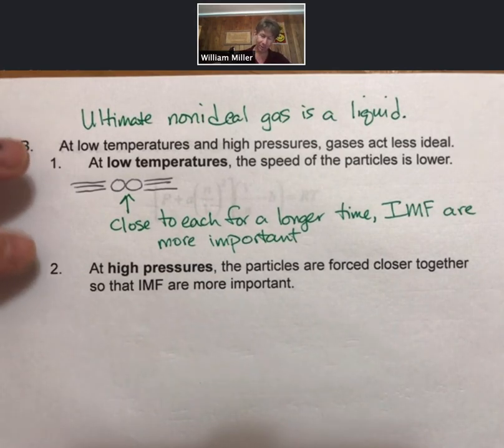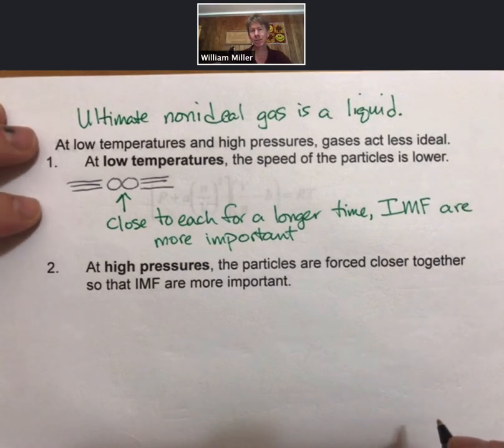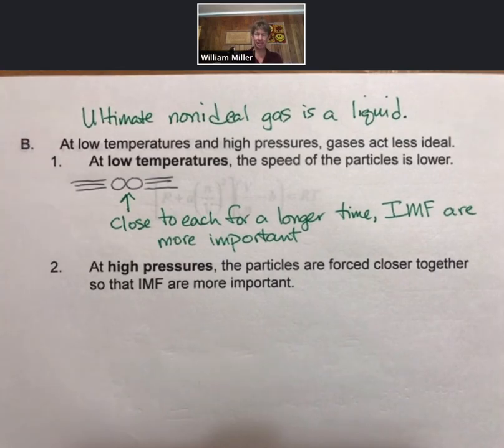At high pressures, the particles are forced closer together so that IMF are important. Remember, our picture of a gas phase is that the gas particles are 10 diameters apart.